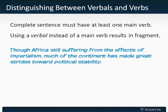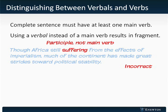Sometimes, the use of a verbal where a verb is required makes a clause or just a part of a sentence a fragment, but the sentence is still grammatically wrong. Look at this: 'Though Africa, still suffering from the effects of imperialism, much of the continent has made great strides toward political stability.' The second half of this sentence appears to be correct — 'continent' does take the main verb 'has made.' However, the first part, the dependent clause, does not have a main verb.